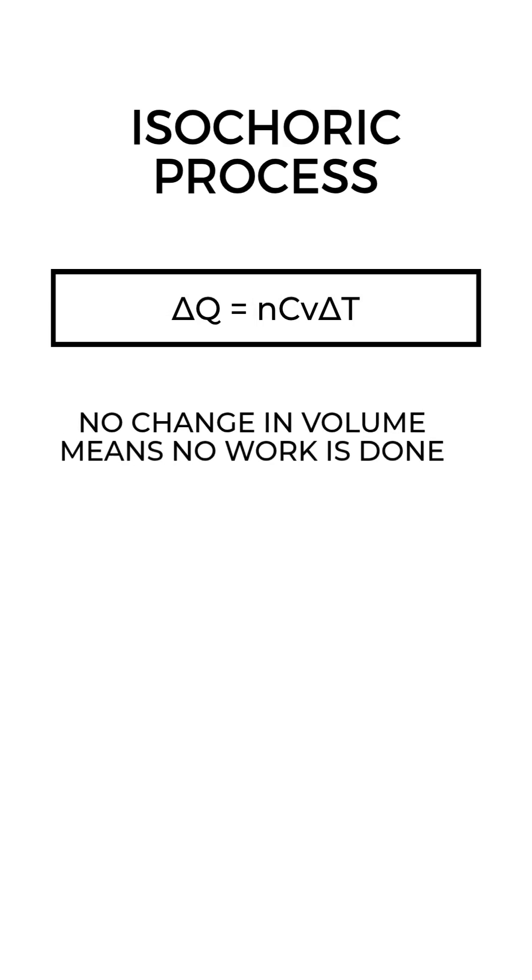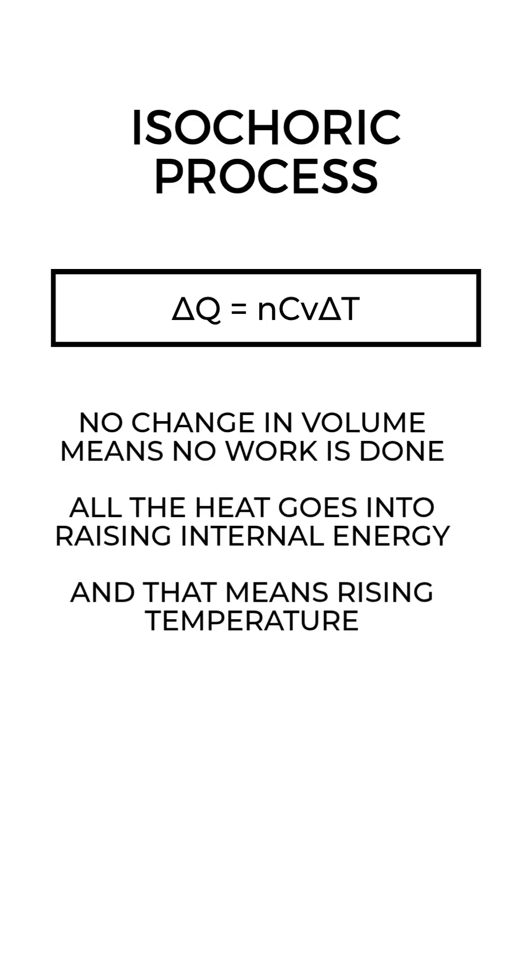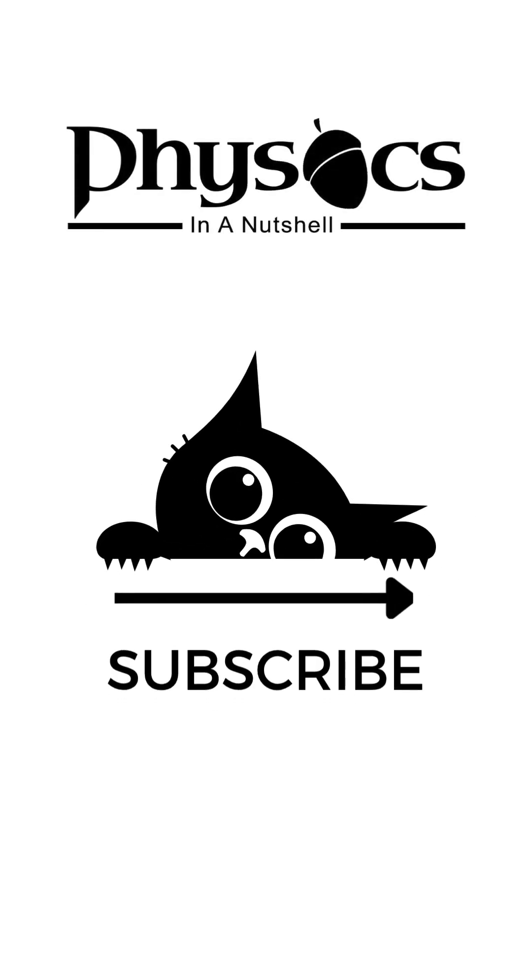So in an isochoric process, no change in volume means no work is done. All the heat goes into raising internal energy, and that means rising temperature. It's simple. It's rigid, and it's how pressure cookers and gas thermometers do their job.